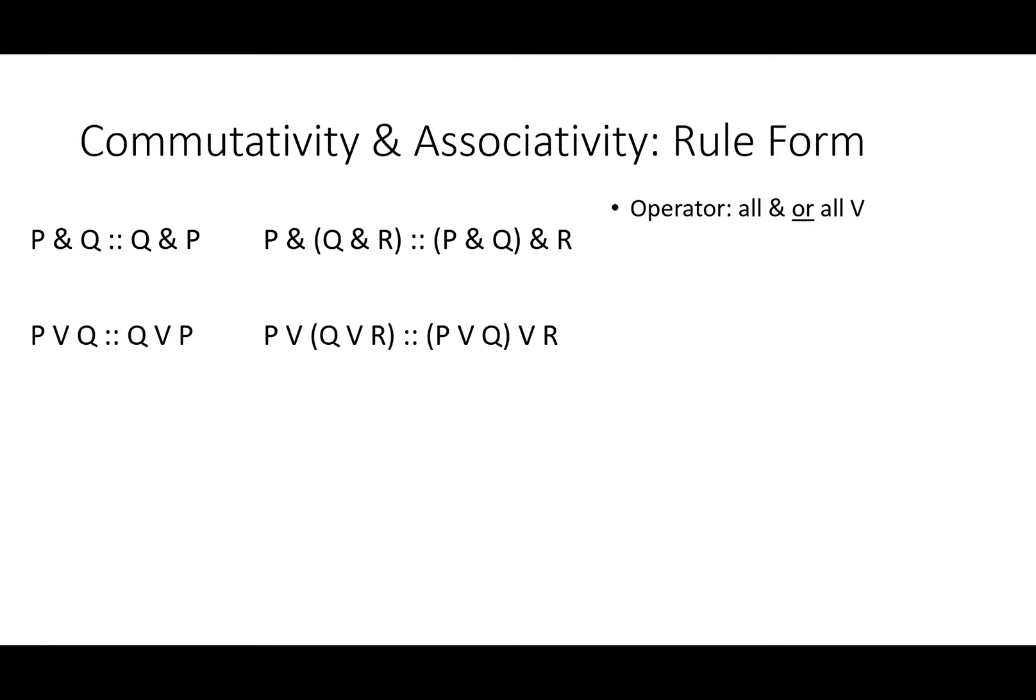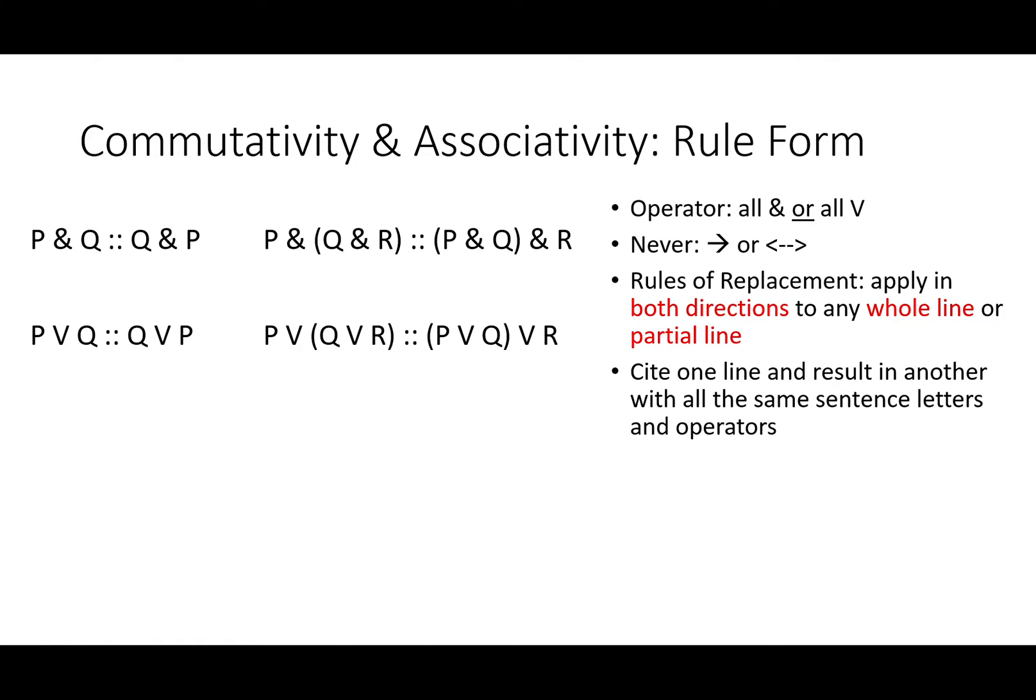With both of these rules, the operator must be all AND or all V. They never work with conditional or biconditional. As rules of replacement, they apply in both directions to any whole line or partial line. With these rules, you cite one line and result in another with all the same sentence letters and operators. Commutativity changes the order of conjuncts or disjuncts, while associativity changes the location of parentheses.